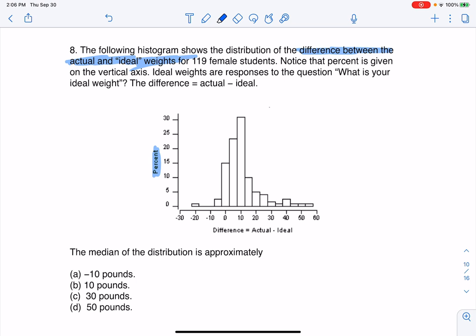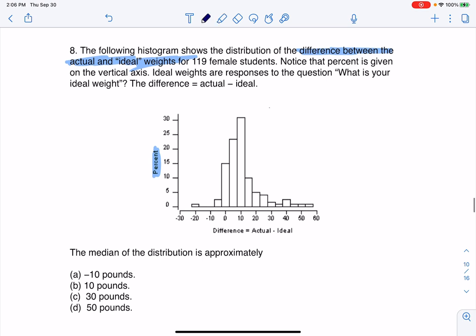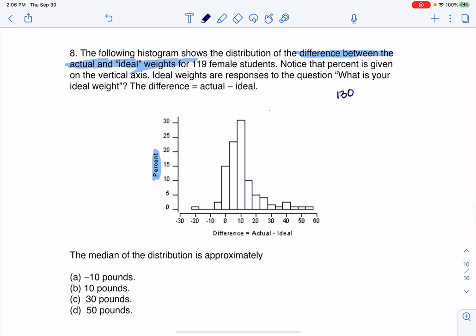Ideal weight is the response to the question, what is your ideal weight? And we did actual minus ideal. So theoretically, let's say someone's ideal weight was 130 pounds, but they actually weighed 135. Then that difference, actual minus ideal, would be a positive 5. So they weigh 5 more pounds than they ideally want to weigh.